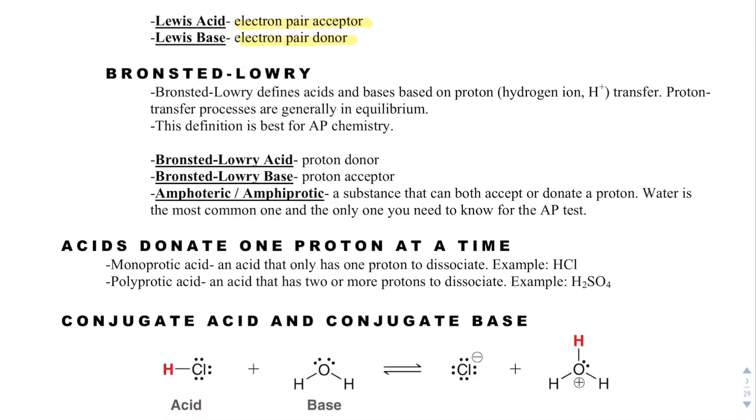And then the one that we use a lot is a Bronsted-Lowry definition, because Bronsted-Lowry acid is a proton donor, and a Bronsted-Lowry base is a proton acceptor. And a proton is, you could say P+, which we're not really going to do in this unit. But a proton is really an H+, and here's why.